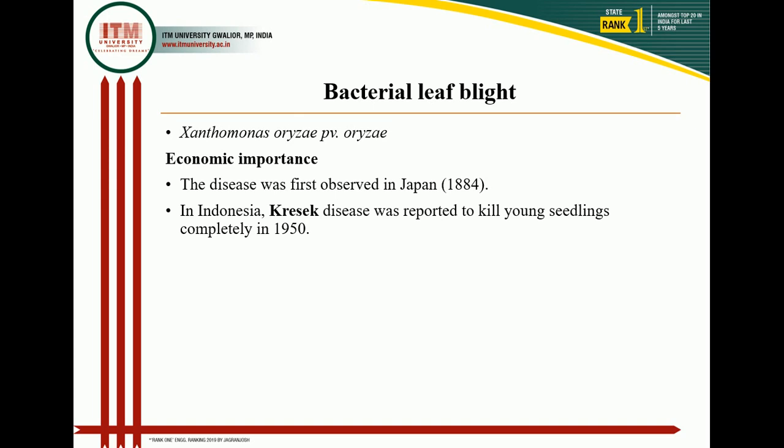The second disease is bacterial leaf blight, caused by Xanthomonas oryzae pathovar oryzae. Xanthomonas is a gram-negative bacteria with monotrichous flagella — meaning only one polar flagellum is present on Xanthomonas.